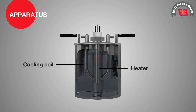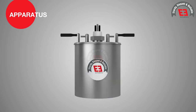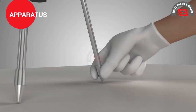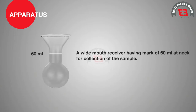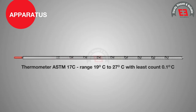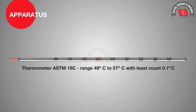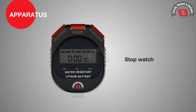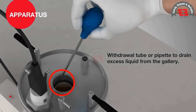The lid of the water bath has a heater and cooling coil to bring the temperature of the bath media up or down. The bath is placed on a tripod stand with leveling arrangements. A wide mouth receiver with a mark of 60 ml at the neck is used for collection of the sample. A thermometer ASTM 17C, range 19 to 27 degrees Celsius, with a least count of 0.1 degrees Celsius, a stopwatch accurate to 0.1 second, and a withdrawal tube or pipette to drain excess liquid from the gallery are also required.